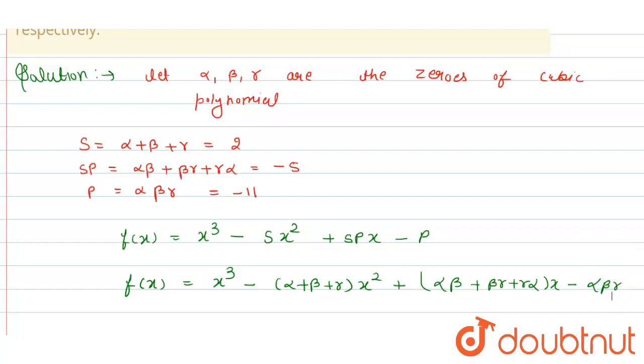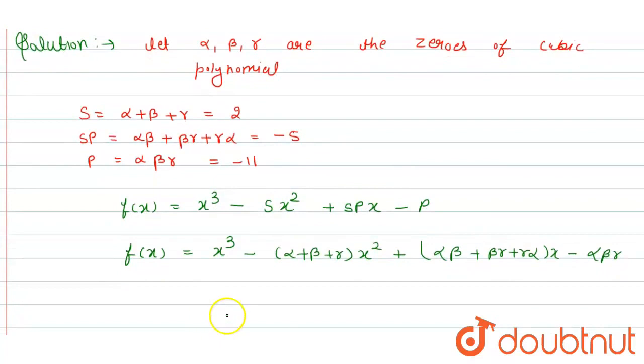All the values are given, so I'll substitute them. f(x) equals x³ minus sum, that is 2x². Plus—that is minus—so it becomes minus 5x. And minus minus becomes plus 11. This is the final answer, the final cubic polynomial. Thank you.